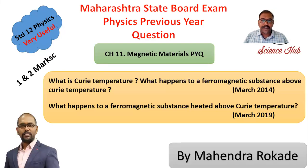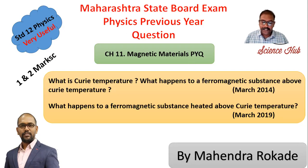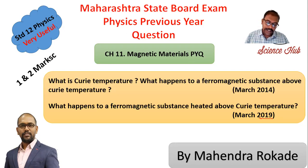This is a previous year question from chapter 11, Magnetic Materials. The question is: what is Curie temperature and what happens to a ferromagnetic substance above Curie temperature? This was asked in March 2014, and recently they also asked what happens to a ferromagnetic substance heated above Curie temperature. This question is worth one mark and two marks respectively.